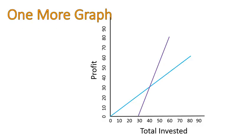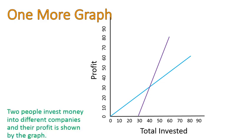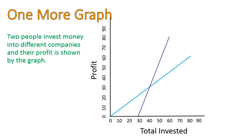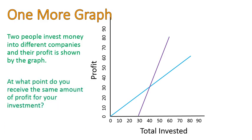Sometimes you'll be given a graph that sets up a word problem like this: two different people invest money into different companies and their profits are shown by the graph below. At what point do you receive the same amount of profit for your investment? It would be the point where they cross — (40, 30). So they both invested $40 and they both had $30 profit. That's the point where they cross, given a graph and a word problem.